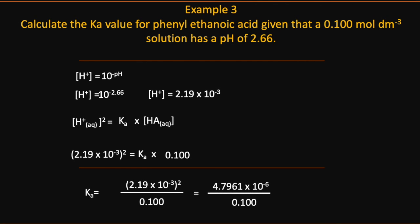We rearrange the equation and we find Ka to be equal to 4.79 × 10⁻⁵ mol dm⁻³.